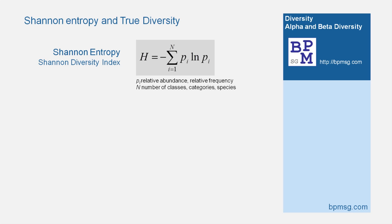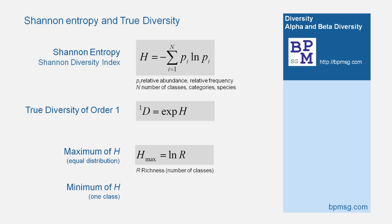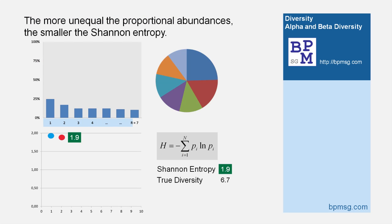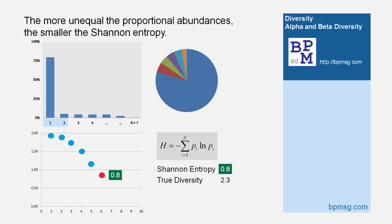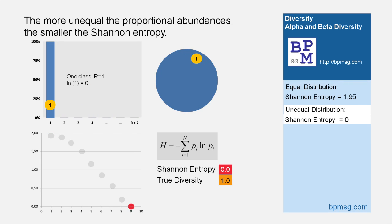Taking the natural logarithm, we can convert to true diversity numbers using the exponential function. For an equal distribution, the maximum of the Shannon Entropy equals the natural logarithm of ridges R, or number of classes in the distribution. The minimum is zero when our proportional variable is concentrated in one category only. The more unequal the proportional abundances, the smaller the Shannon Entropy. Therefore, high Shannon Entropy stands for high diversity, low Shannon Entropy for low diversity.